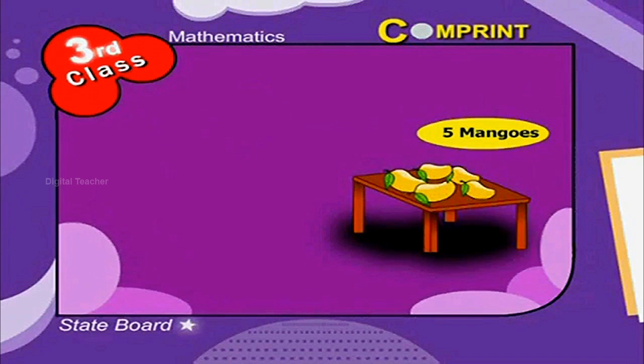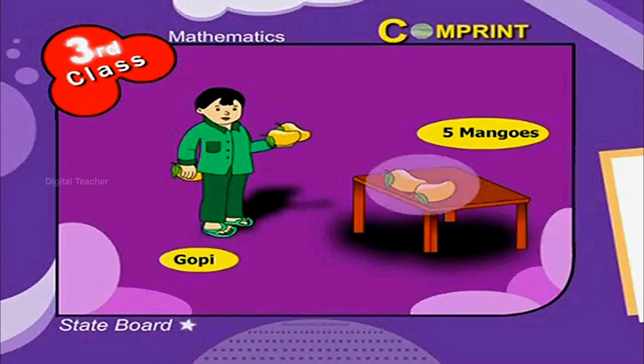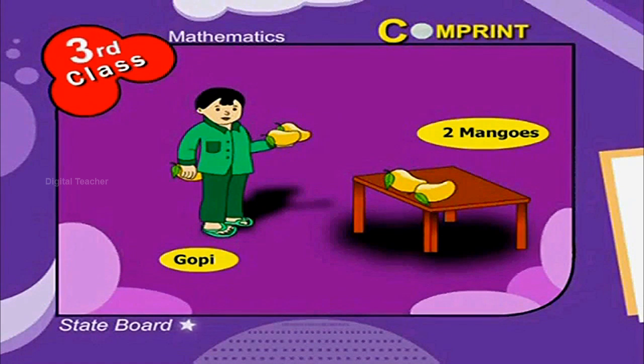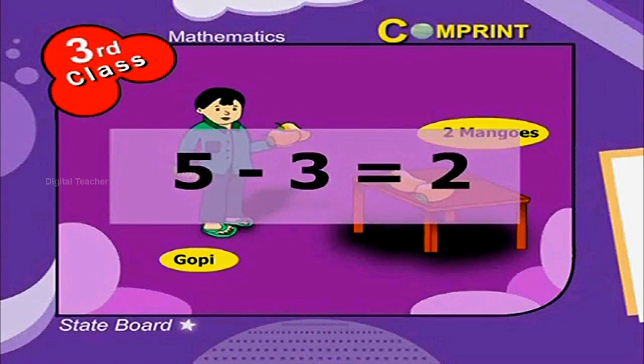There are 5 mangoes on the table. Gopi took 3 of them. The number of mangoes remaining on the table is 2. This can be written as 5 minus 3 is equal to 2.